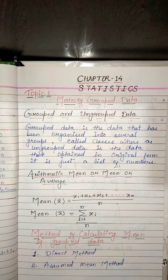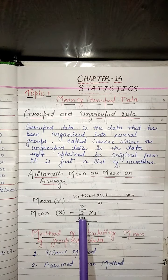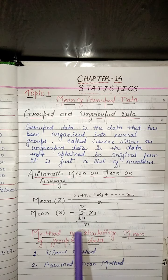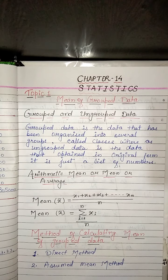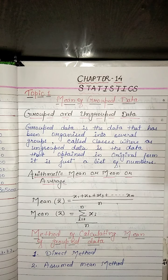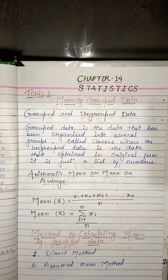The Greek letter Σ (sigma) means summation. Let x1, x2, ..., xn be the observations with corresponding frequencies f1, f2, ..., fn.